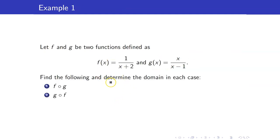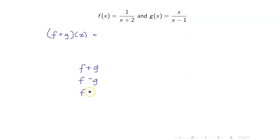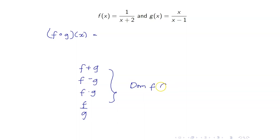To illustrate, let us find the domain of f circle g and g circle f. Take note that in getting the domain of f circle g, you really have to perform the operation. Unlike for f plus g, f minus g, f times g, and f over g, you can get the domain without calculating what these functions are — all you need is the intersection of the domains.